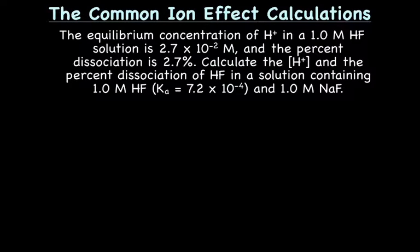Let's practice a calculation with the common ion effect. This will show you how to do calculations, but it will show mathematically how adding a common ion actually changes the pH and the ionization of the solution. The equilibrium concentration of H+ in a 1.0 M HF solution is 2.7 x 10^-2 M, and the percent dissociation is 2.7%. Calculate the H+ and the percent dissociation of HF in a solution containing 1.0 M HF and 1.0 M NaF.